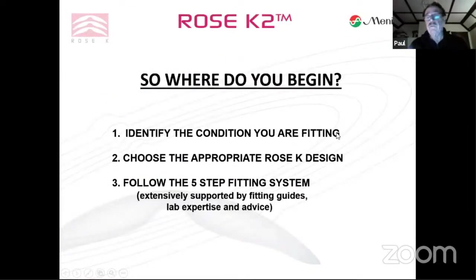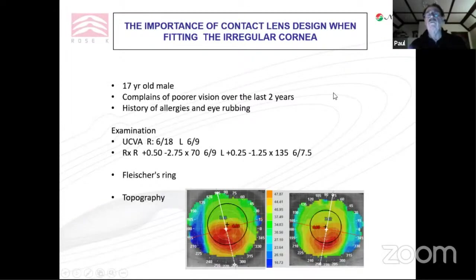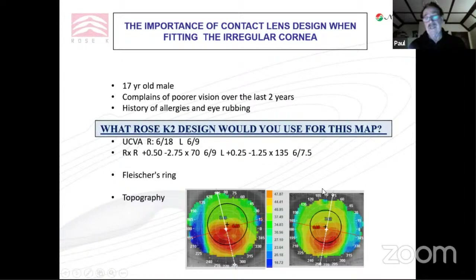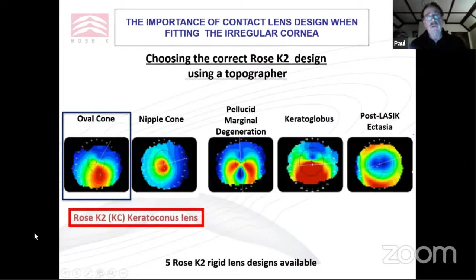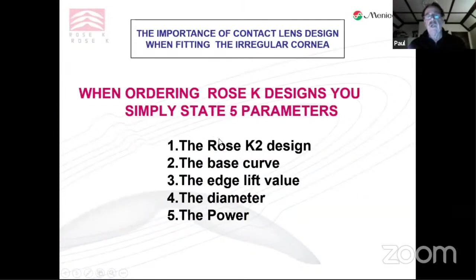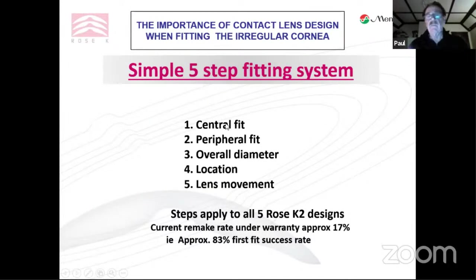Where do you begin? You identify the condition you're fitting, try to get that correct, choose the appropriate design, then follow my five-step fitting system. For example, a 17-year-old male with poor vision over the last two years, history of allergies and eye rubbing — looking at his maps, this is an oval cone. We're going to use the keratoconic design because it has a slightly larger back optic than the nipple cone design and will suit this condition better. When ordering the lens, you specify the design, base curve, edge lift value, diameter, and power.